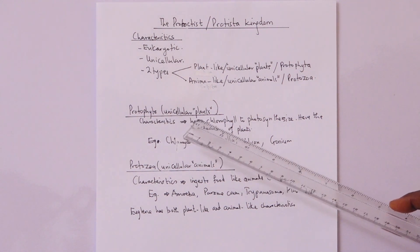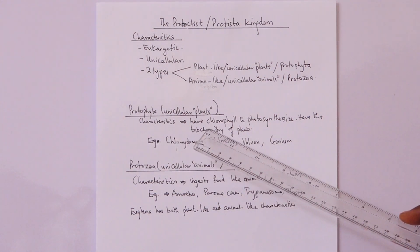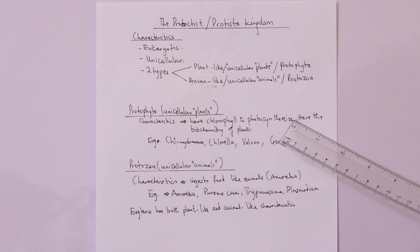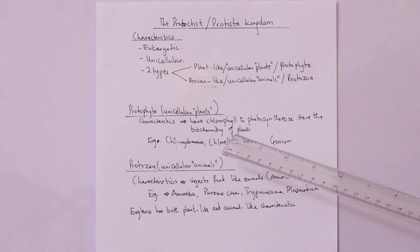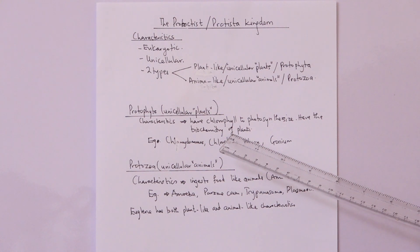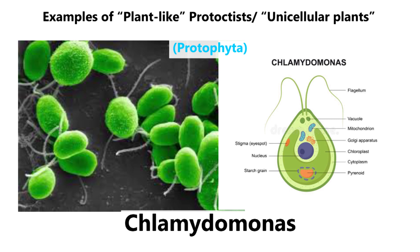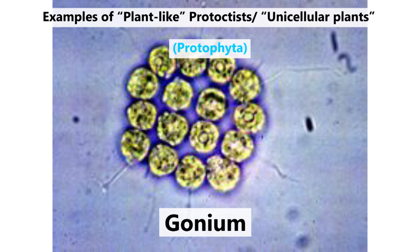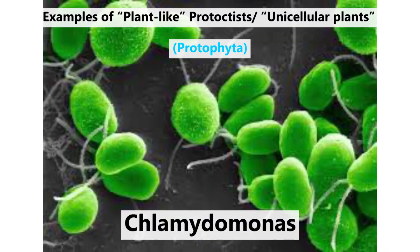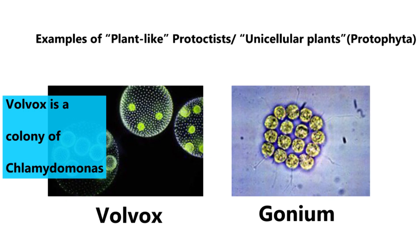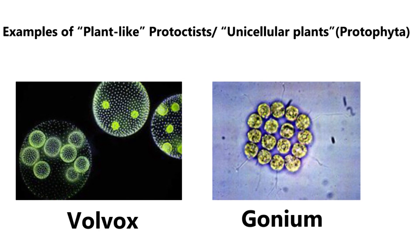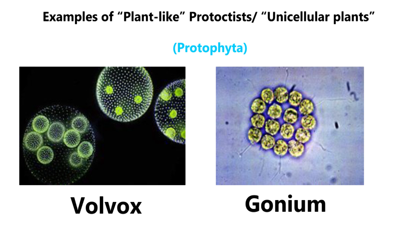The plant-like protists, or Protophyta, are unicellular. Their key characteristic is that they have chlorophyll to photosynthesize, so their biochemistry is just like plants — only that they are unicellular and don't have cell walls. Examples are Chlamydomonas, Chlorella, Volvox, and Gonium. Volvox and Gonium are colonial forms. These are the Protophyta — the plant-like protists.